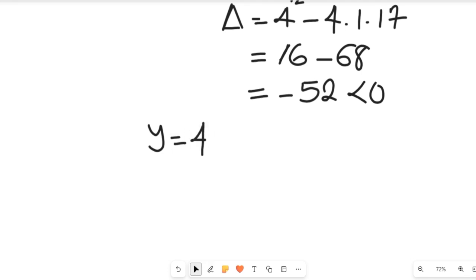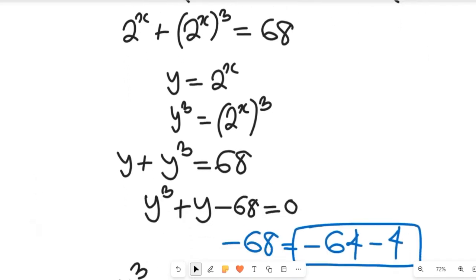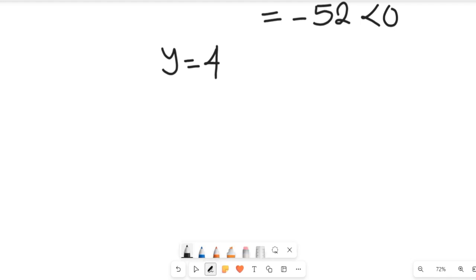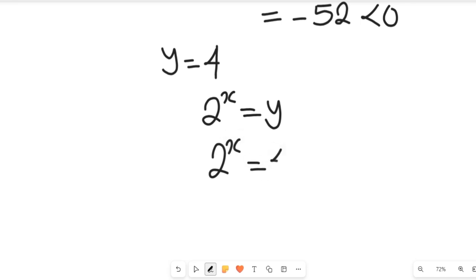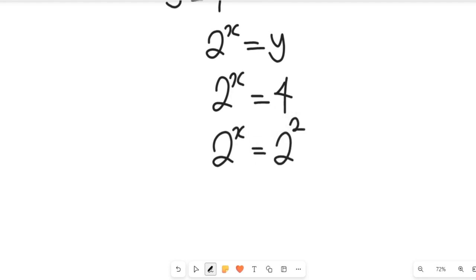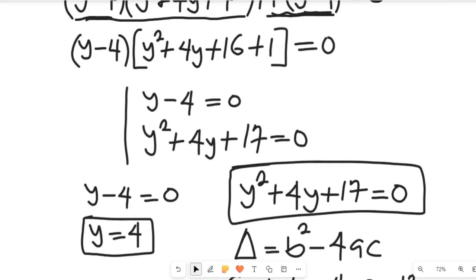That is not our final answer because we are asked to find the value of x. Remember we said y is equal to 2 to the power of x. So if 2 to the power of x equals y, which is 4, then 2 to the power of x equals 2 to the power of 2. Since we have the same base, we equate the exponents, and x is equal to 2. So x equals 2 is the solution that satisfies that exponential equation.